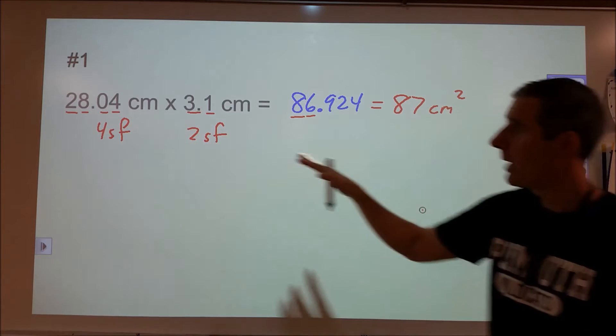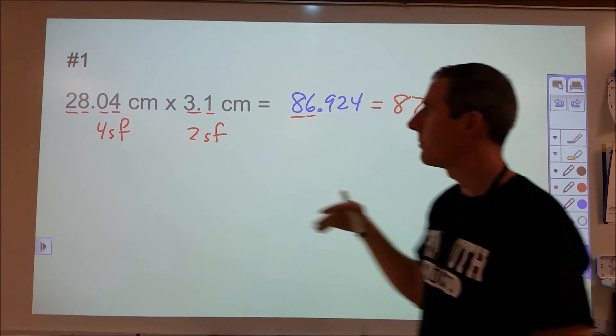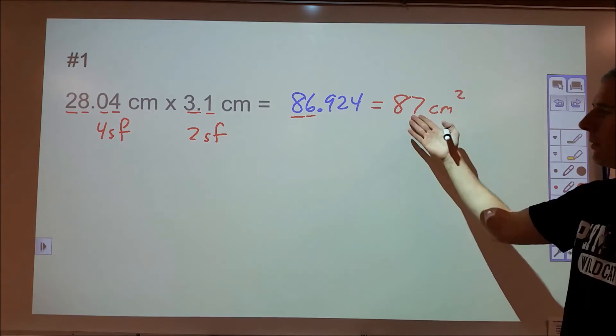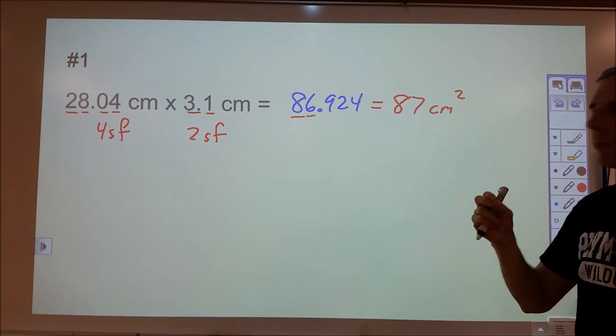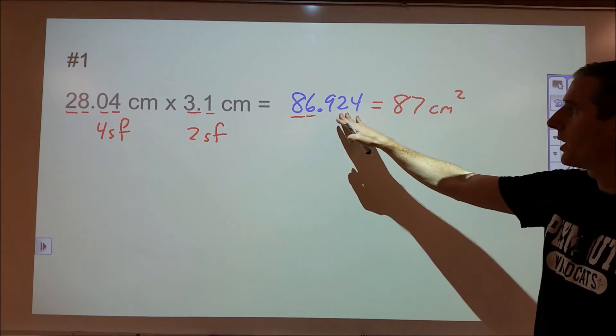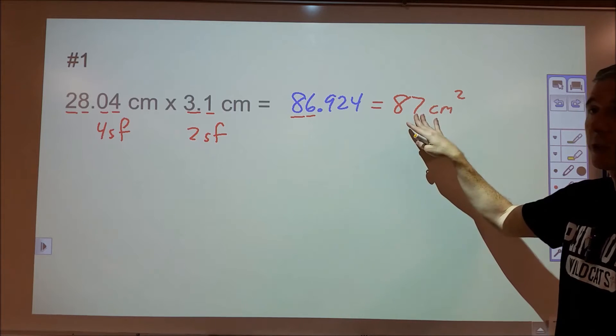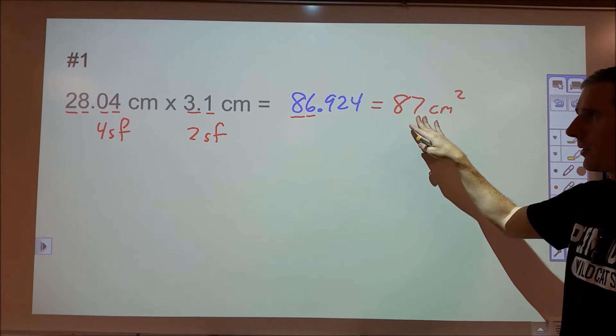Now this 87 properly analyzes how many sig figs I had in my measurements to begin with and reflects the quality of instrument that I used. The 86.924 would be correct in a math class but this is what's correct in a measurement sense or in a science class.